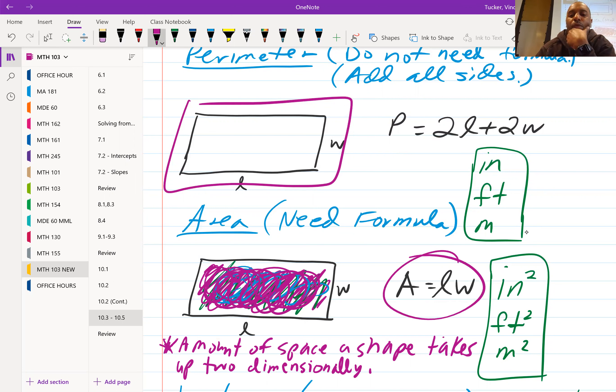And then here's the formula for the area of a rectangle, A equal to L times W, length times width. And when you finish calculating area, it will always be in that measurement squared. So square inches or inches squared, feet squared, square footage, or meters squared.